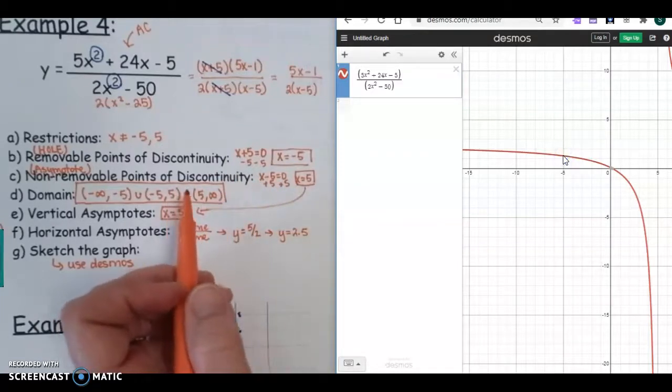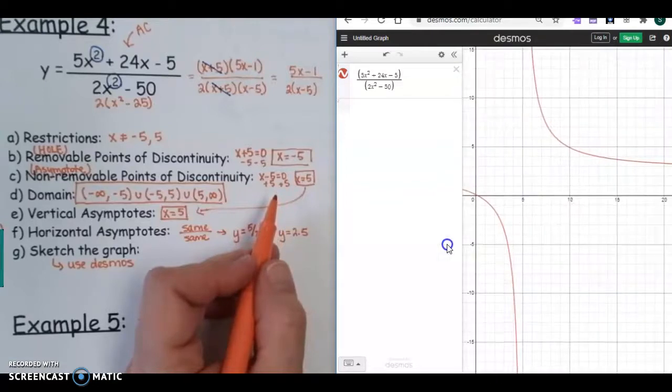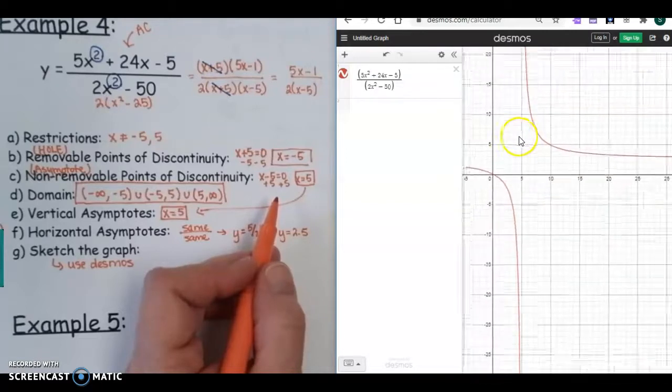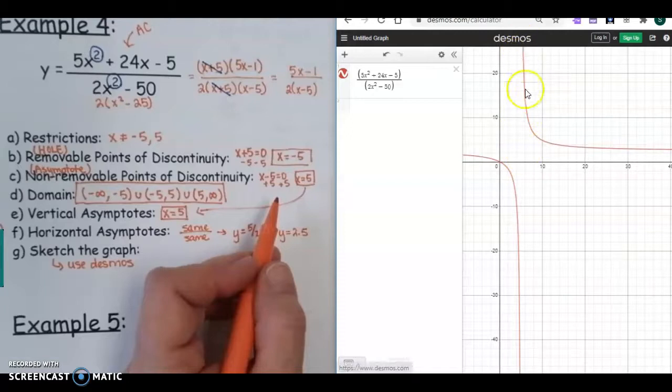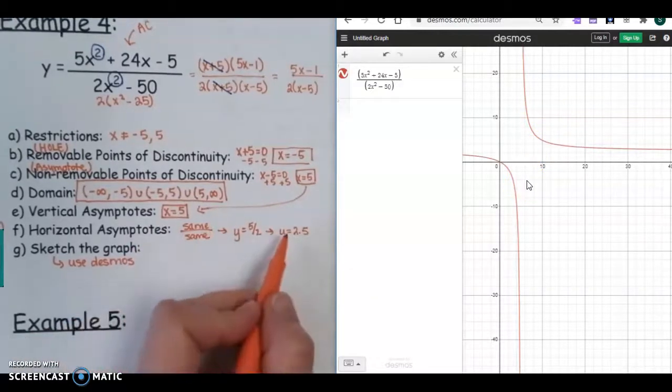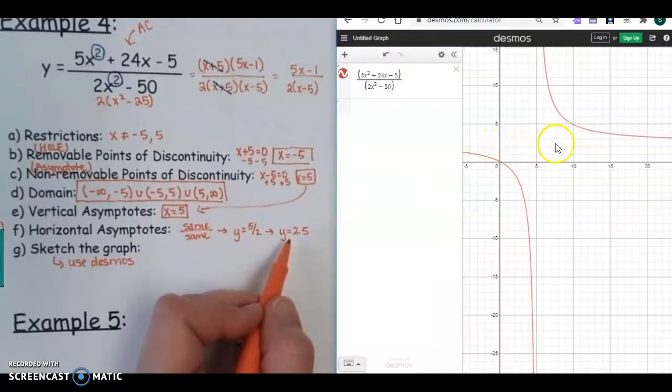It says that we should have a vertical asymptote at X = 5. So let's drag the graph over here. And remember, it's this vertical line that our graph gets closer and closer to, but will never touch. So if I zoom way out, you can see it's never going to touch that line X = 5. It gets really close. Then it says horizontal asymptote should be at 2.5. So that would be here. So it gets really close, but it's never going to touch that graph there.